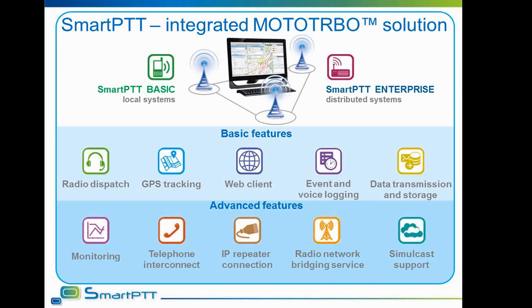The dispatcher software gives the opportunity to control and log the flow of data and voice, handle radio network requests, track the location of subscribers, and monitor the state of repeaters. SmartPTT connects to MOTOTRBO networks directly via IP, including Capacity Plus and Link Capacity Plus, over the network application interface for both voice and data transmission.